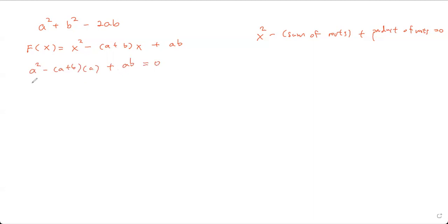Similarly, I'm going to sub x equals b into the equation. So you get b squared minus (a plus b) times b plus ab. And that should also give us zero, because a and b are the roots.